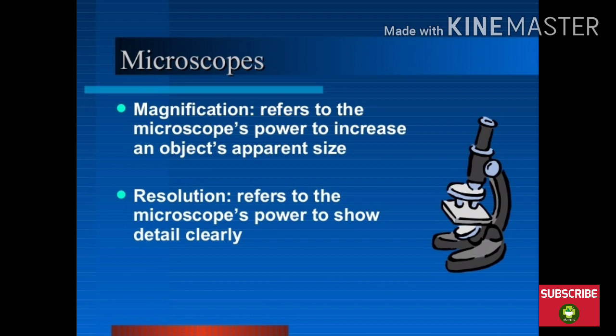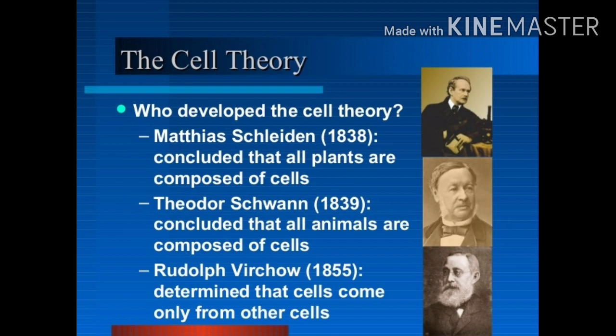The microscope has the power to increase an object's apparent size. When we increase the power, we can see an object very easily — that is its apparent size, meaning magnification. What is resolution? The resolution refers to the microscope's power to show detail clearly. Resolution is basically our clarification — we are seeing a clear vision or not in the microscope.